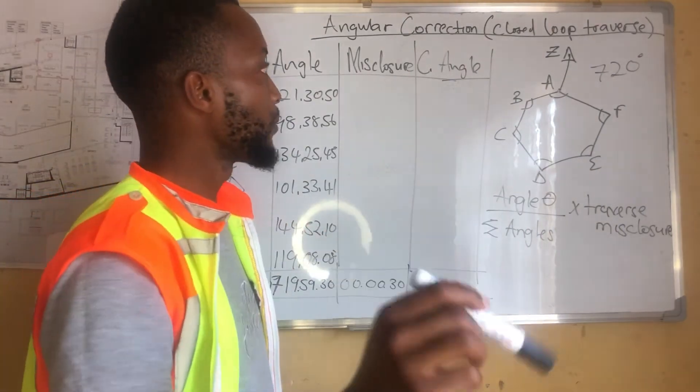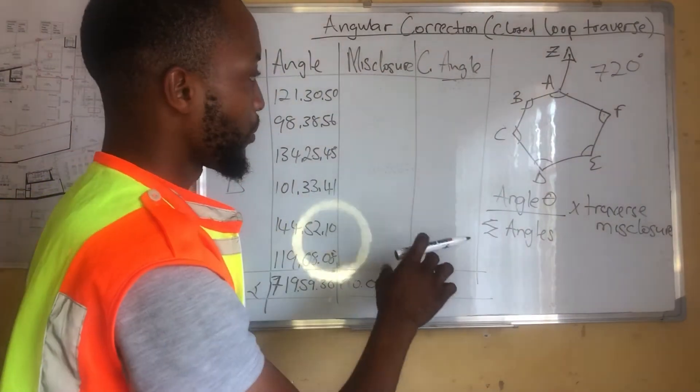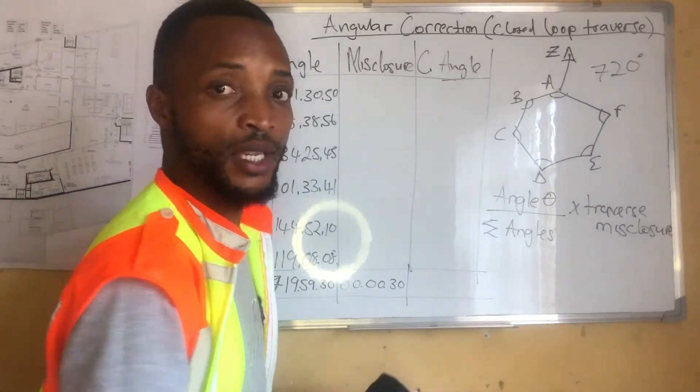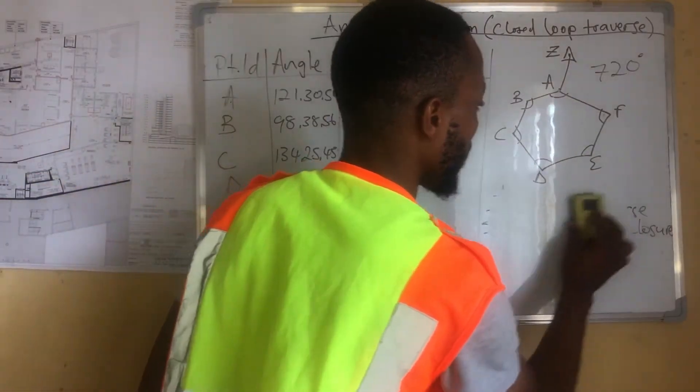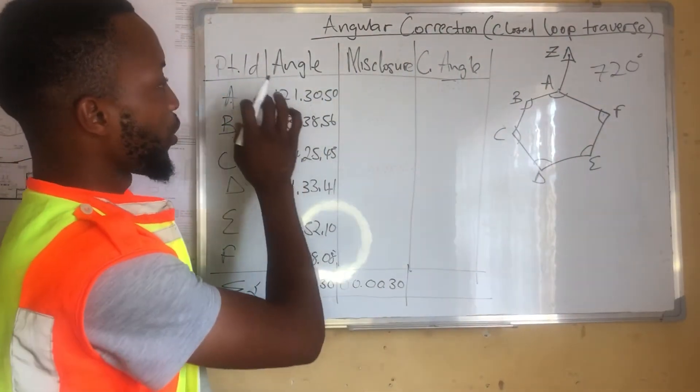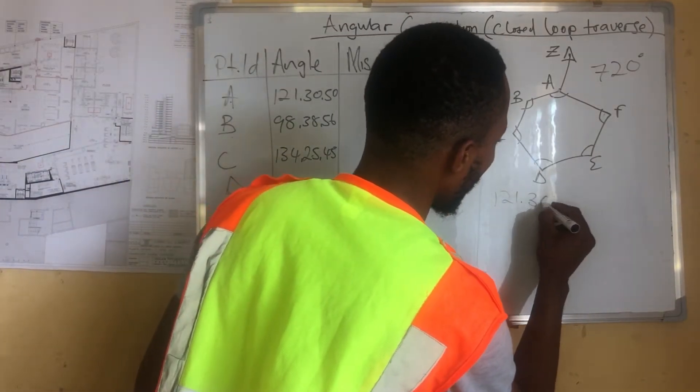the misclosure to 30 seconds amongst these angles. For the sake of time, I'm going to just go through and write the angles. But we need to punch. What we do is, we take, for example, I'll give one example to simplify for the benefit of everyone. For example, we'll do for A.